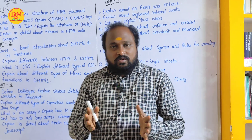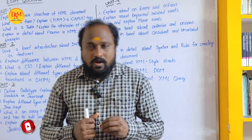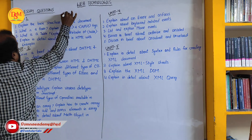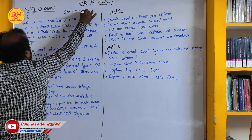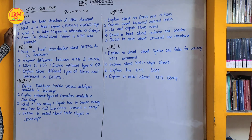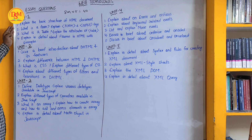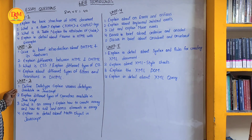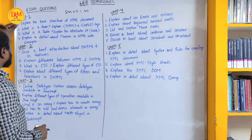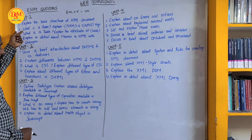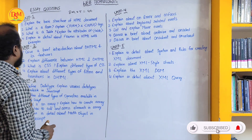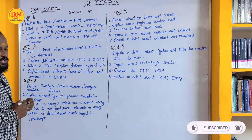As you know, the paper pattern for Web Technology is for 50 marks. The long answer questions are for 8 marks each — 5 questions into 8 marks equals 40 marks. Unit-wise, from the first unit he will ask two questions, second unit one question, third unit two questions, fourth and fifth — total 10 questions. Internal choice means from each unit you have to write any one question from two.